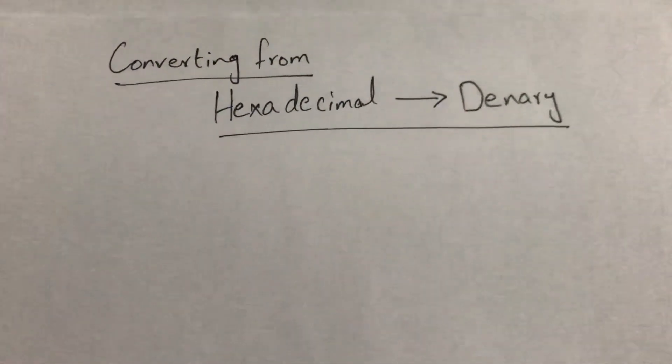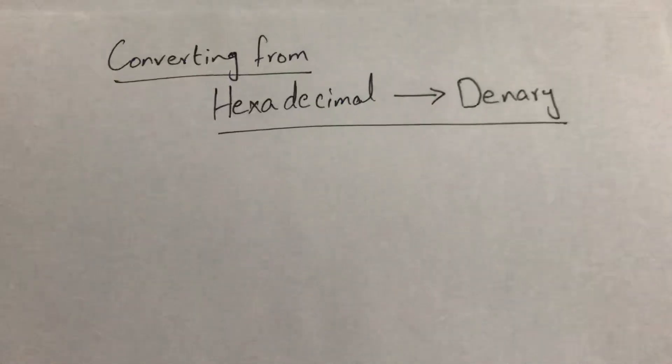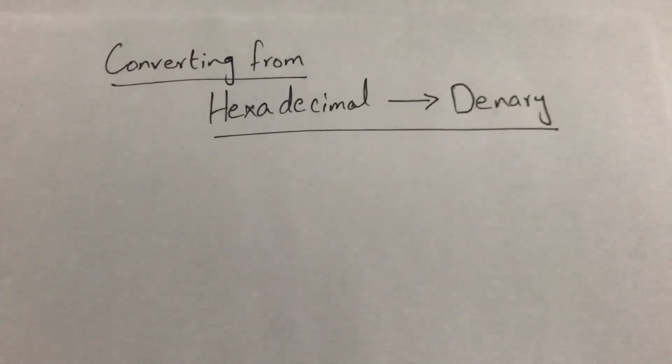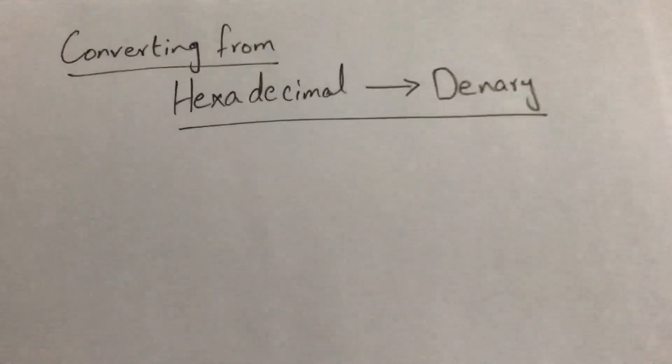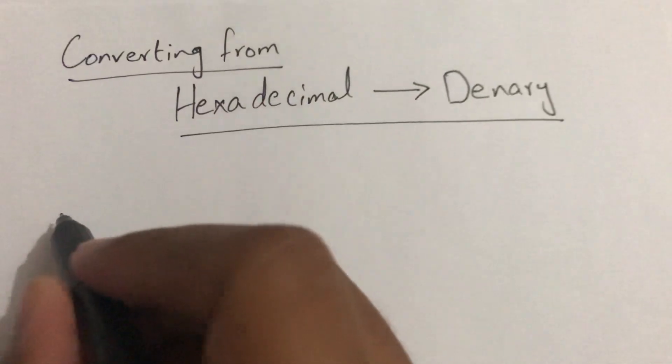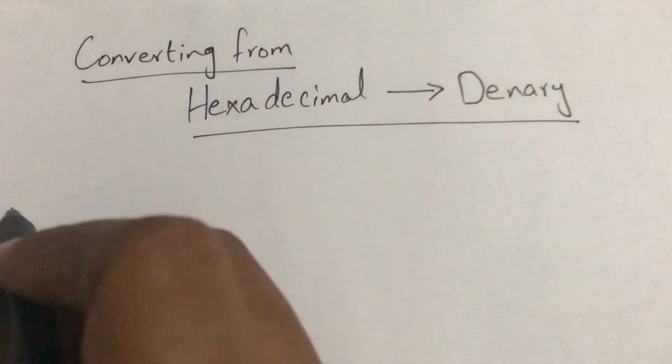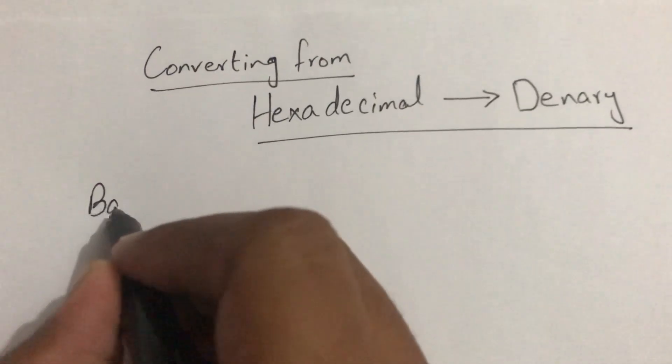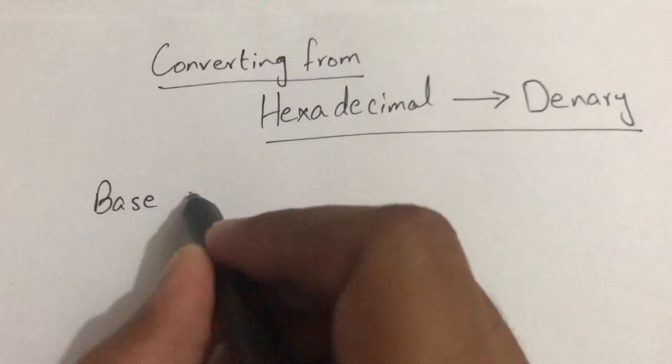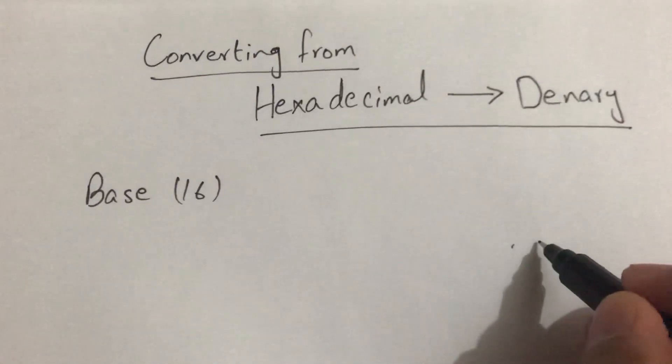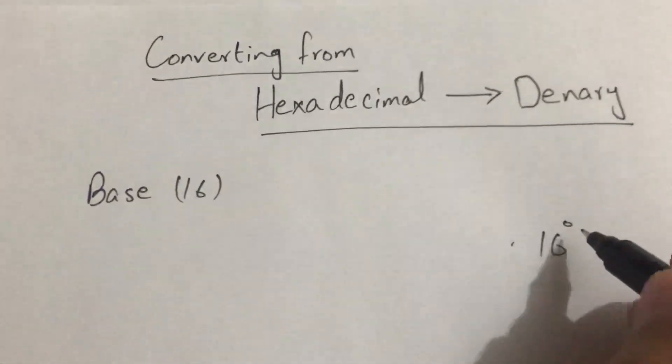So our next topic would be conversion of hexadecimal numbers to denary numbers. We all know that the base value of hexadecimal number is 16, so 16 raised to the power 0.